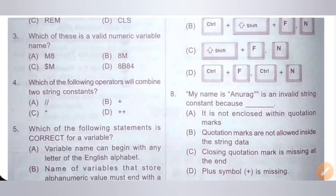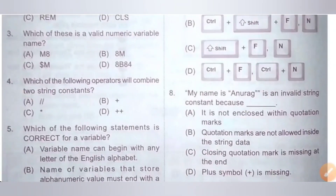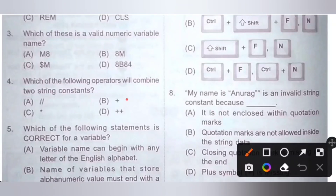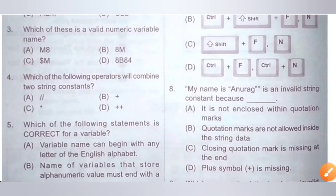Fourth question: which of the following operators will combine two string constants? Options are A) double slash, B) plus, C) asterisk, D) double plus. The plus operator will combine two string constants. Option B is the correct answer.